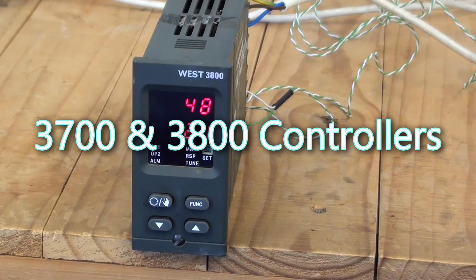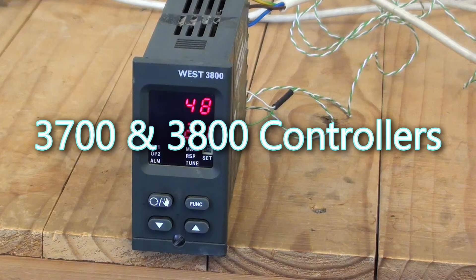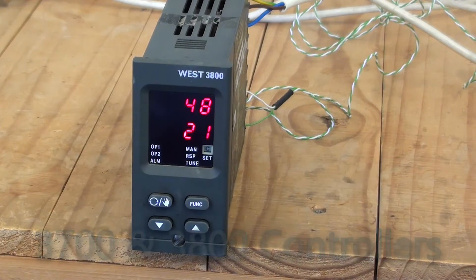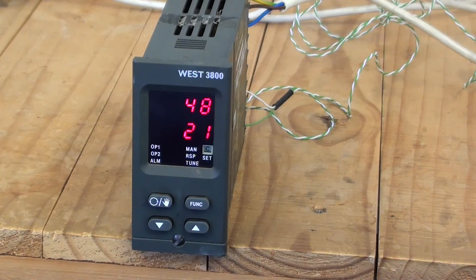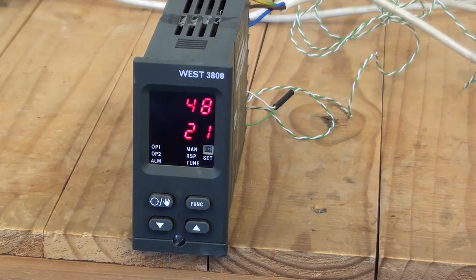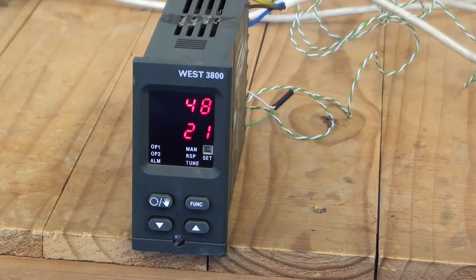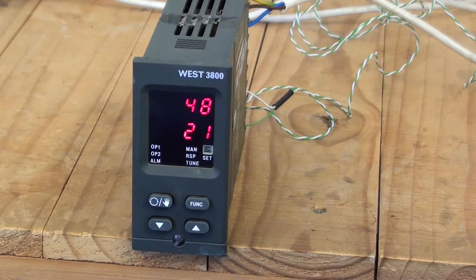This is the West 3800 PID controller. It's a 1/8 DIN controller and it was discontinued in 2000 so the product is no longer supported. I know that there's still many of these still working out on site so we've made this video as it may be of use for those of you that still have these controllers.